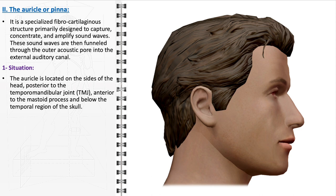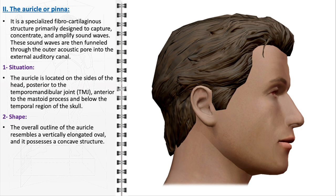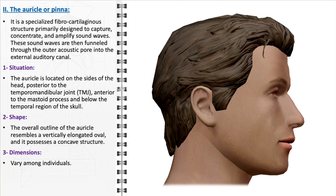Its strategic anatomical position on the sides of the head plays a crucial role in the effectiveness of this function. Situated posterior to the temporomandibular joint and anterior to the mastoid process, the auricle is optimally located for sound collection. This placement, just below the temporal region of the skull, ensures minimal interference from other cranial structures. In terms of its shape, the auricle is distinctly characterized by its vertically elongated oval outline. The concave structure aids in efficiently funneling sound waves into the outer acoustic pore, enhancing our ability to determine the source of a noise. The dimensions of the auricle vary significantly among individuals, yet the fundamental design remains consistent, emphasizing its role as an acoustic apparatus.